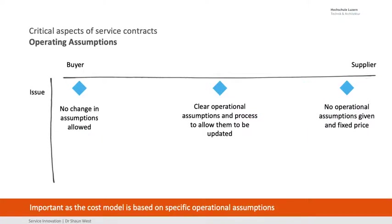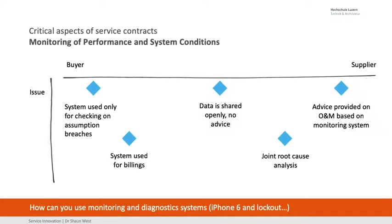Think of a taxi — a taxi doesn't stop the meter just because they're waiting outside your house. Operating assumptions: how are they operating the plant? That may or may not be important depending on the type of service contract you have. Monitoring of performance and system conditions — what are we monitoring? Are we understanding how they operate the machine? How do we do the diagnostics?